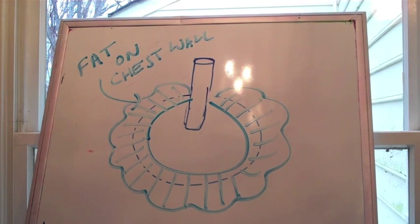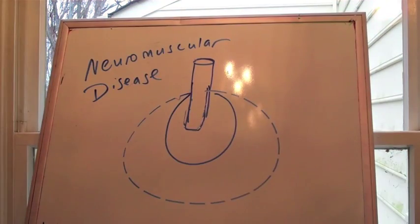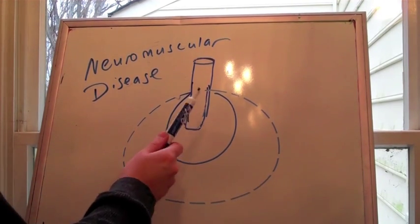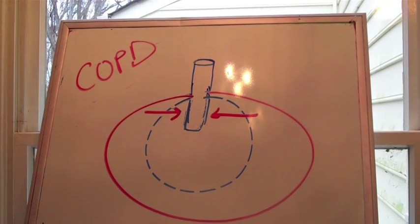Obesity affects your lung volumes. You can envision just having to move all of this extra adipose tissue. Now, people who are muscular don't have this problem because their respiratory muscle strength is improved. And then neuromuscular disease, their residual volume is really high. They just can't breathe out the air.